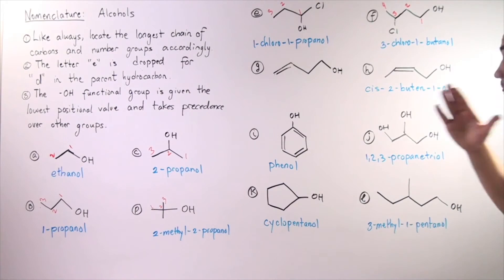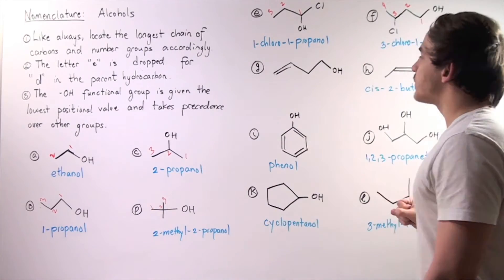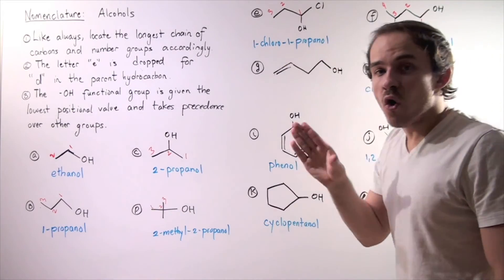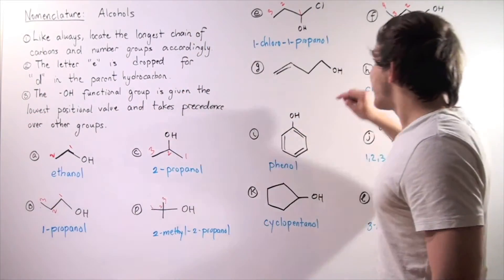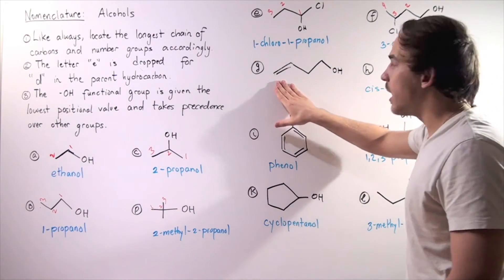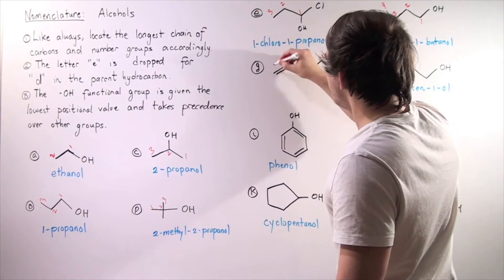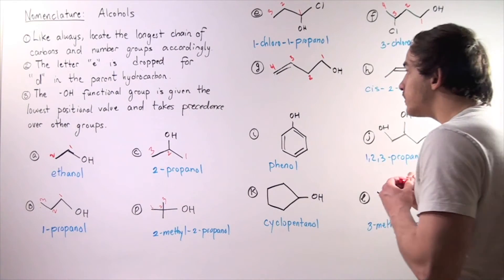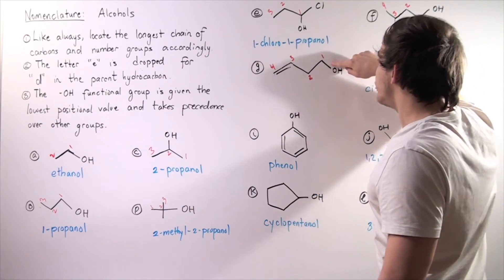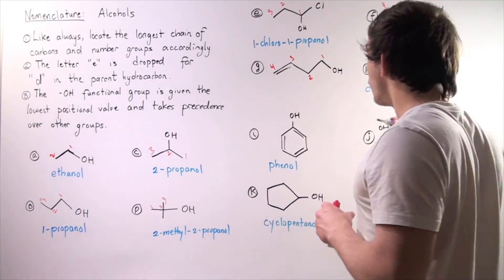Example G: in this example, we have a double bond. Where do we begin — on this end or on this end? According to rule three, the hydroxy group takes precedence over even a double bond and a triple bond. So we start on this end: one, two, three, four. We have a four-carbon chain. On the third carbon, we have a double bond, and on the first carbon, we have our alcohol.